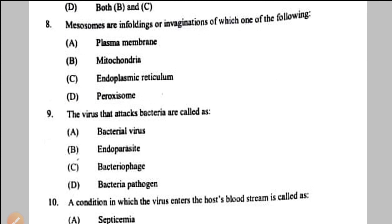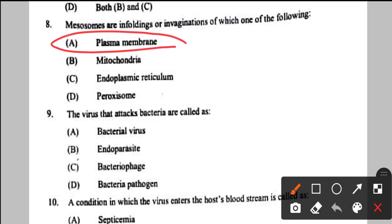Question number 8: mesosomes are infoldings of which structure? Mesosomes are found in prokaryotic cells and are inwardly folded structures of the plasma membrane. Their important role is in cellular respiration. So the answer is plasma membrane — option A.